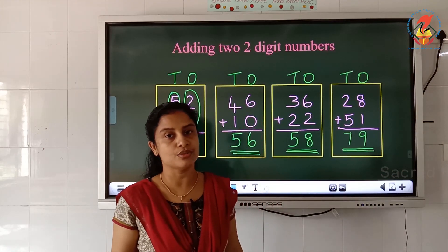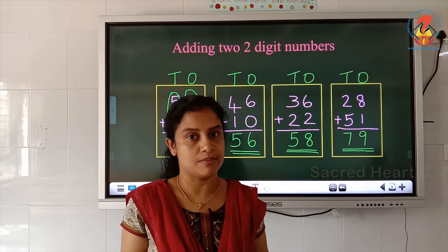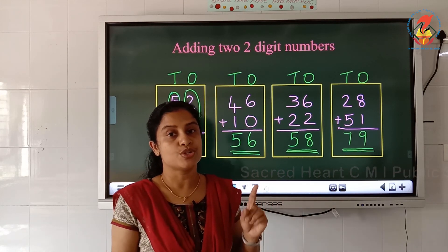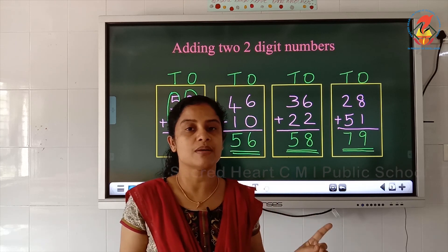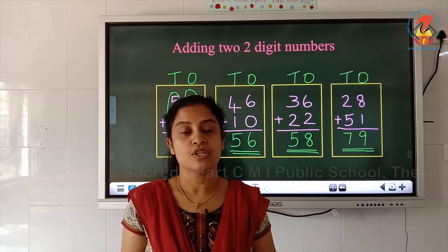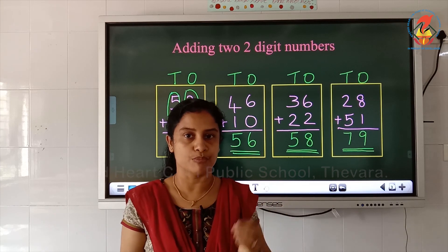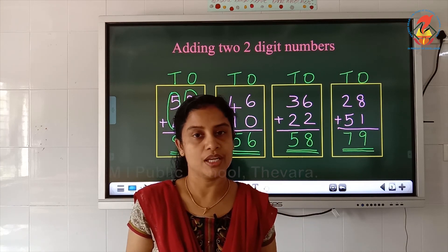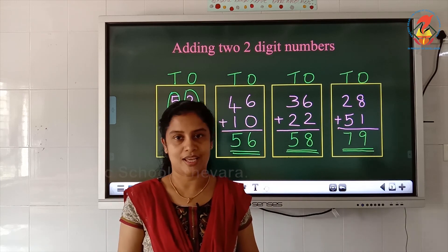So did you all understand how to do? You have already studied addition of one digit numbers. Today you studied the addition of a two digit number and a one digit number, and a two digit number and a two digit number. First practice these types of questions in a rough book, then only do in the worksheet. Practice well. See you in the next class. Thank you.